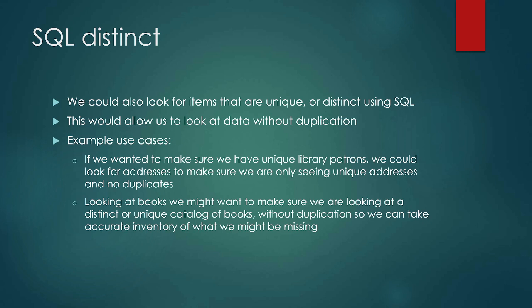We can also look for unique or distinct data so that we can start looking at data without duplication — unique library patrons, unique books, unique patients, unique doctors. We can look for things without duplication and take an accurate inventory. Sometimes you may have duplicate data that's important to keep, but you don't necessarily want it if you're doing an inventory.